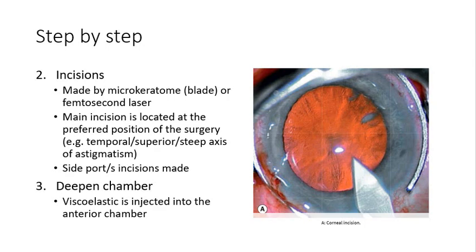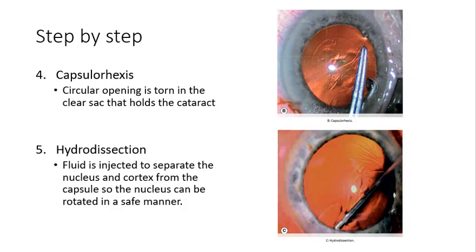Step three is deepening the chamber: viscoelastic is injected into the anterior chamber to deepen it. Step four is capsulorhexis, where a circular opening is torn into the fragile clear sac that holds the cataract. Step five is hydrodissection: fluid is injected to separate the nucleus and cortex of the original lens from the capsule so the nucleus can be safely rotated. Surgeons look out for a fluid wave passing through to confirm correct separation.